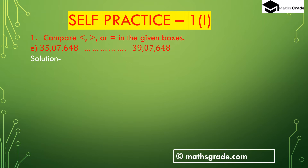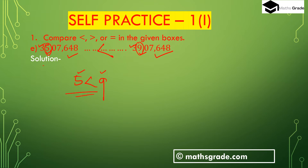Now part (e): 35,76,648 and 39,76,648. Both are 7-digit numbers. Compare the highest place value digit: both have 3 in the 10-lakh place. Then compare the lakh place: 35,76,648 has 5 and 39,76,648 has 9. Since 5 is less than 9, therefore 35,76,648 is less than 39,76,648.